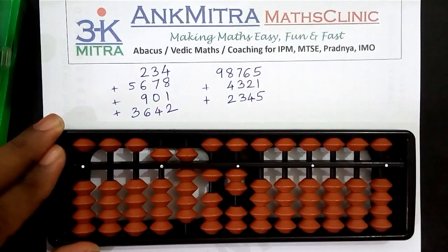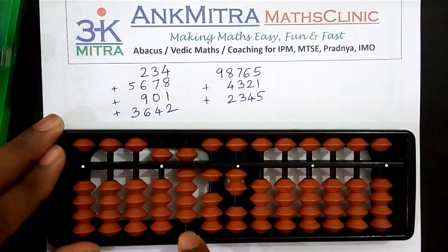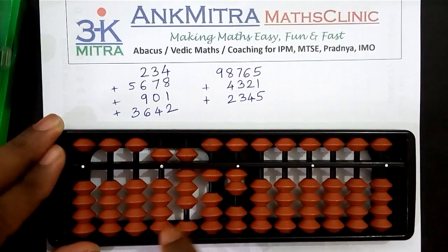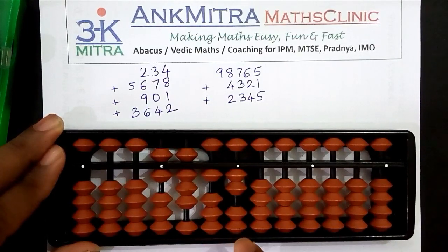Coming to the next number, it's nine hundred and one. It will start on the hundreds place. To add nine on the hundreds place I don't have any bead available, so I'll subtract the big friend of nine — big friend of nine is one — subtracting one here and adding ten on the next left rod. The addition of nine on the hundreds place is done. For the tens place, nothing is to be done as the digit is zero.